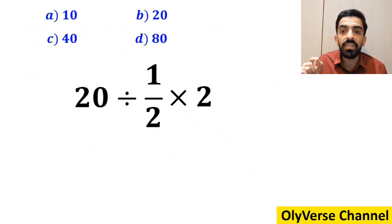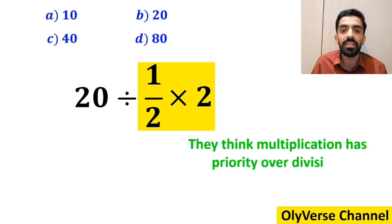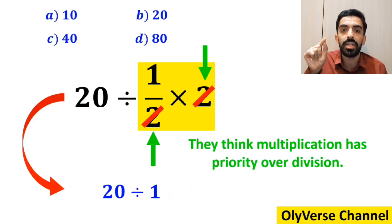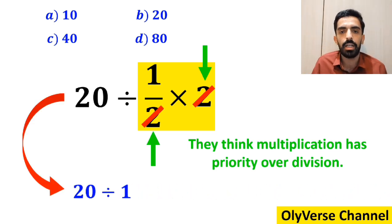At the beginning of solving this question, many people go straight to the expression 1 over 2 multiplied by 2, which I've highlighted in yellow, because they think multiplication has priority over division. And they say it's easy to simplify the 2 with the 2 in the denominator and rewrite this expression as 20 divided by 1, which finally gives them the answer 20.